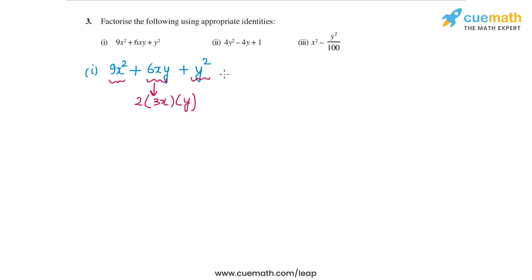So I can write this first expression as 3x whole square plus 2 times 3x times y plus y square. So this is of the form a square plus 2ab plus b square. So this will be a plus b whole square, or 3x plus y whole square.